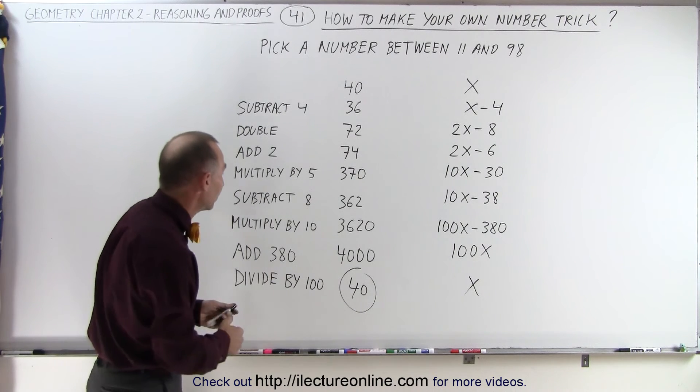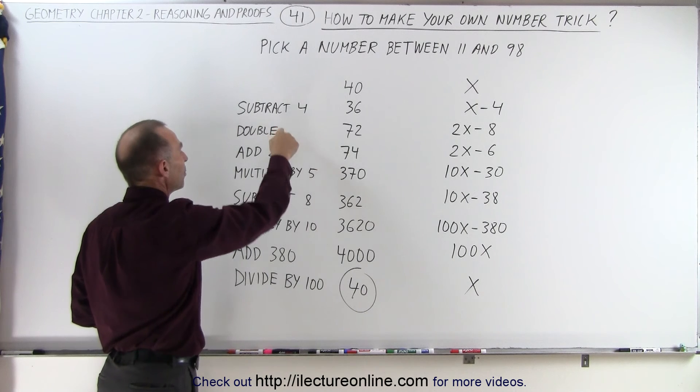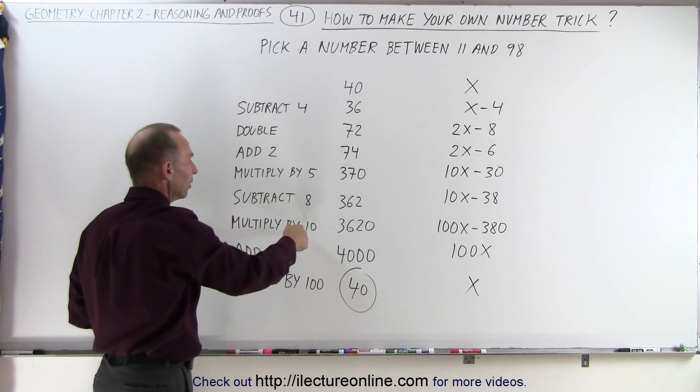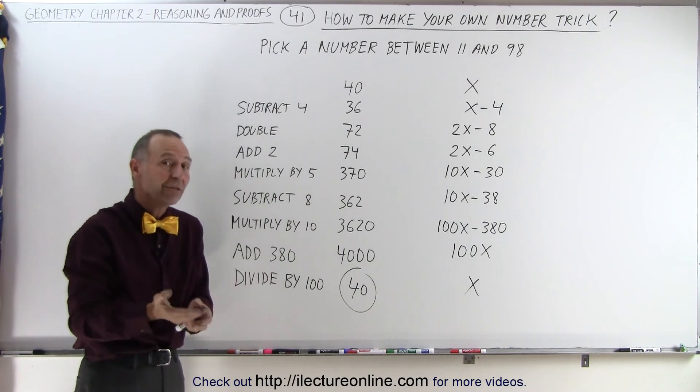Now, it doesn't have to be 100. The reason why we have to divide by 100 is because we doubled, we multiplied times 5, and we multiplied times 10. So together, that is multiplying times 100. So that's why at the end, we have to divide by 100.